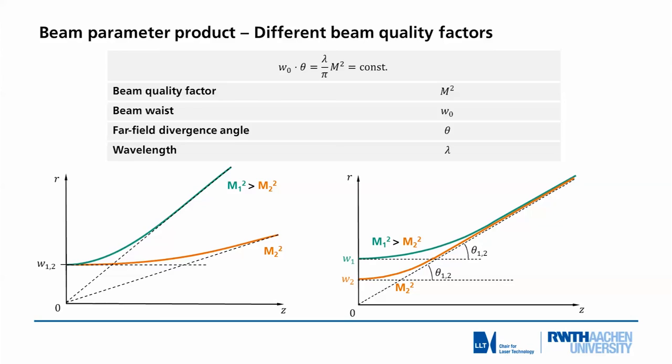So higher beam quality results in less need for focusing to achieve the same focal spot size. And correspondingly, if you have the same divergence, a beam of less quality will result in a higher focus radius with respect to a higher beam quality, which will result in a smaller focal spot w₀.